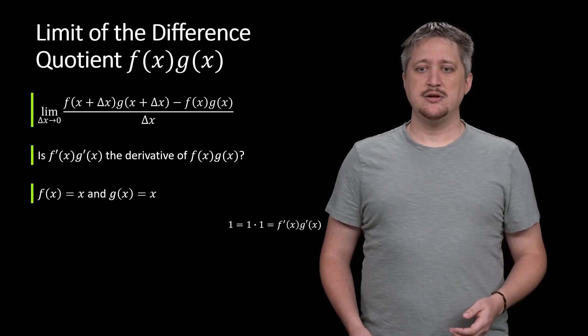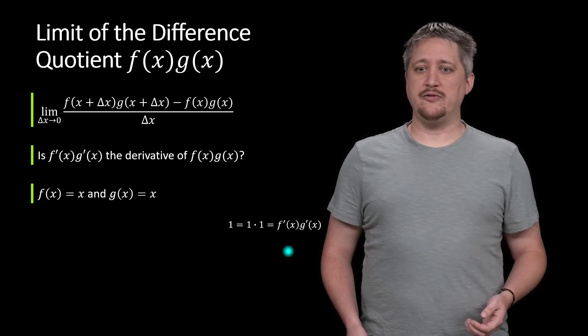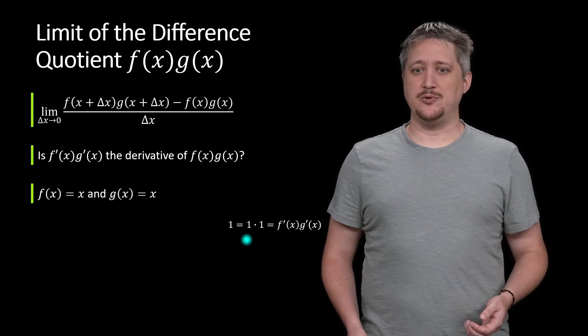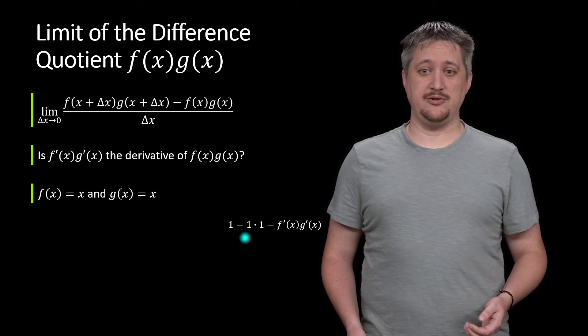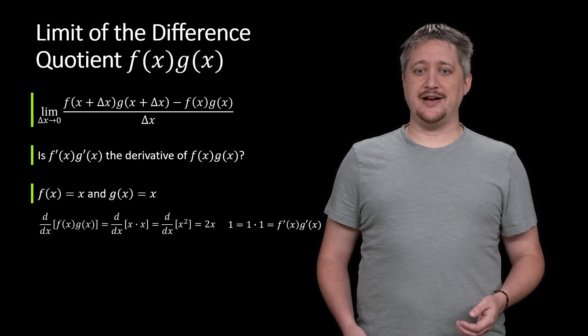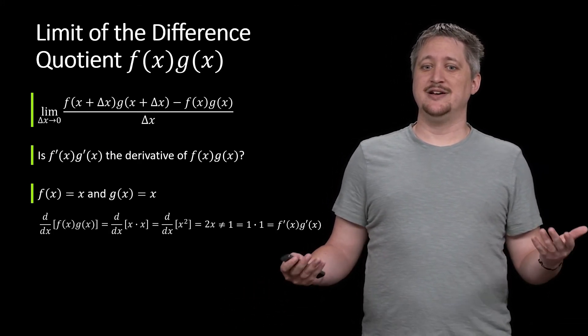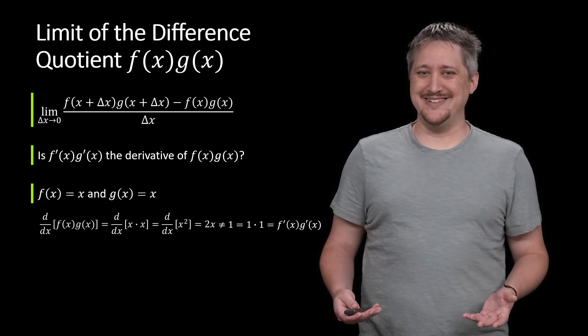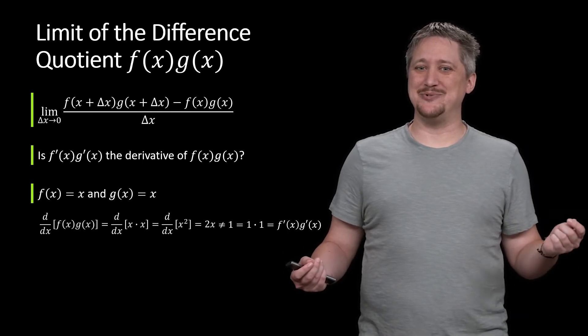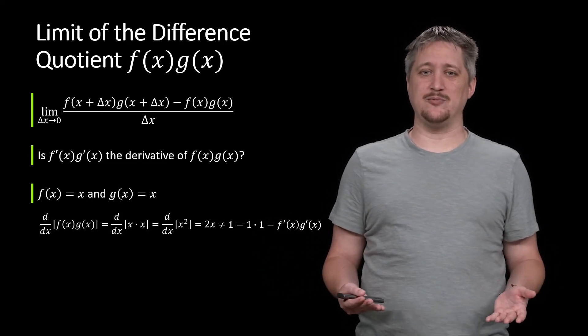On the other direction, we just said the derivative of f is 1 and the derivative of g is 1, so f' times g' is 1 times 1, that's 1. So on the one hand I have that the derivative is 2x, on the other hand I have the derivative is 1, and shockingly those things are not equal. So I can't claim that doing the derivative of the product is just taking the product of the derivatives because here's an example where that doesn't work.